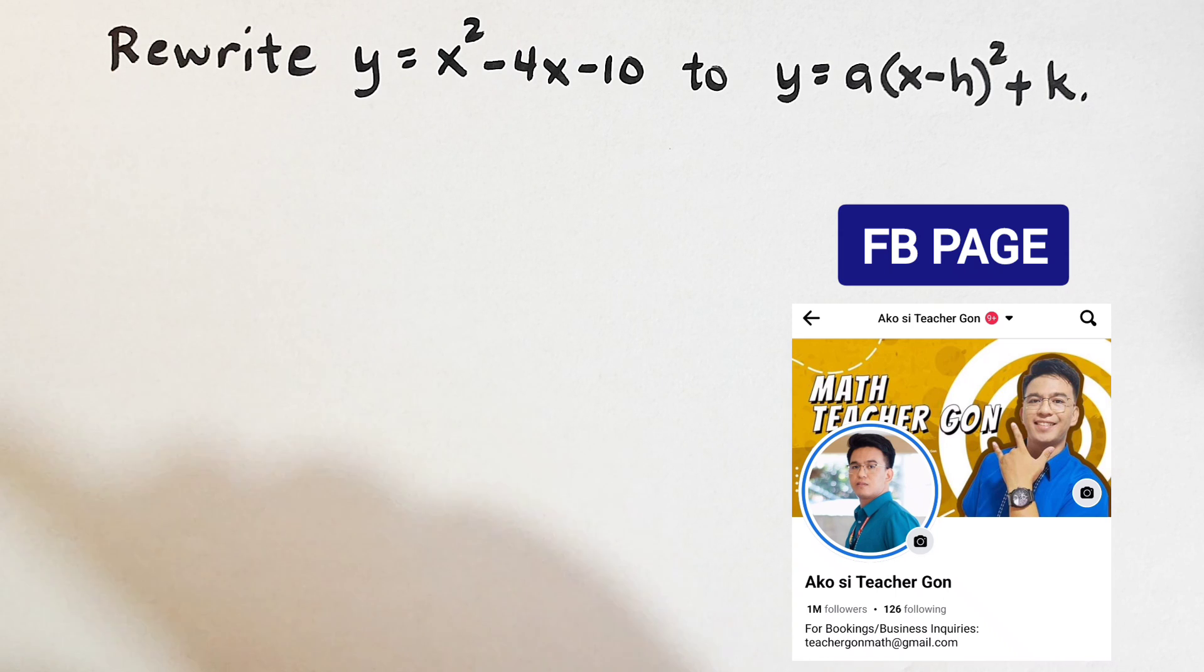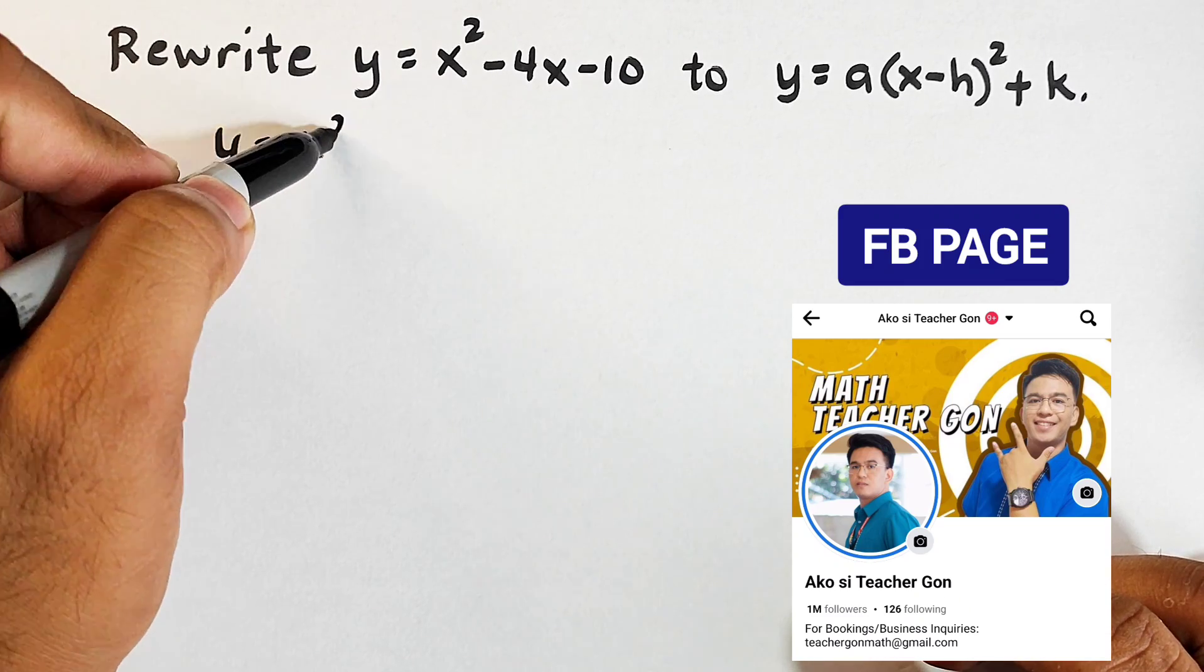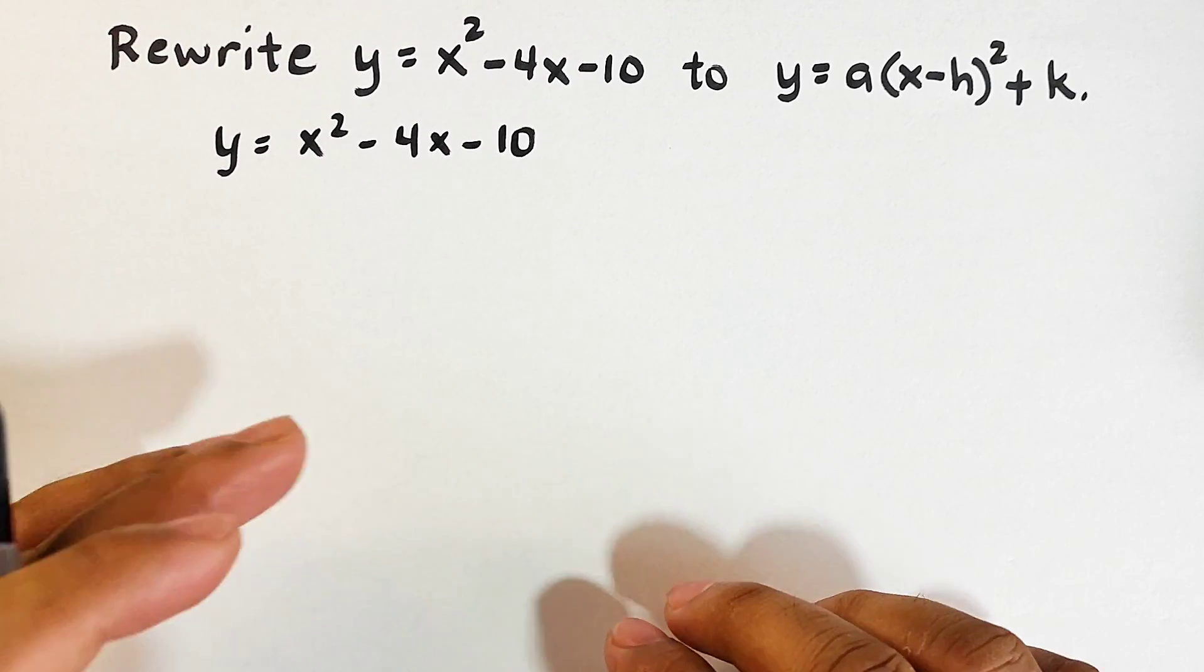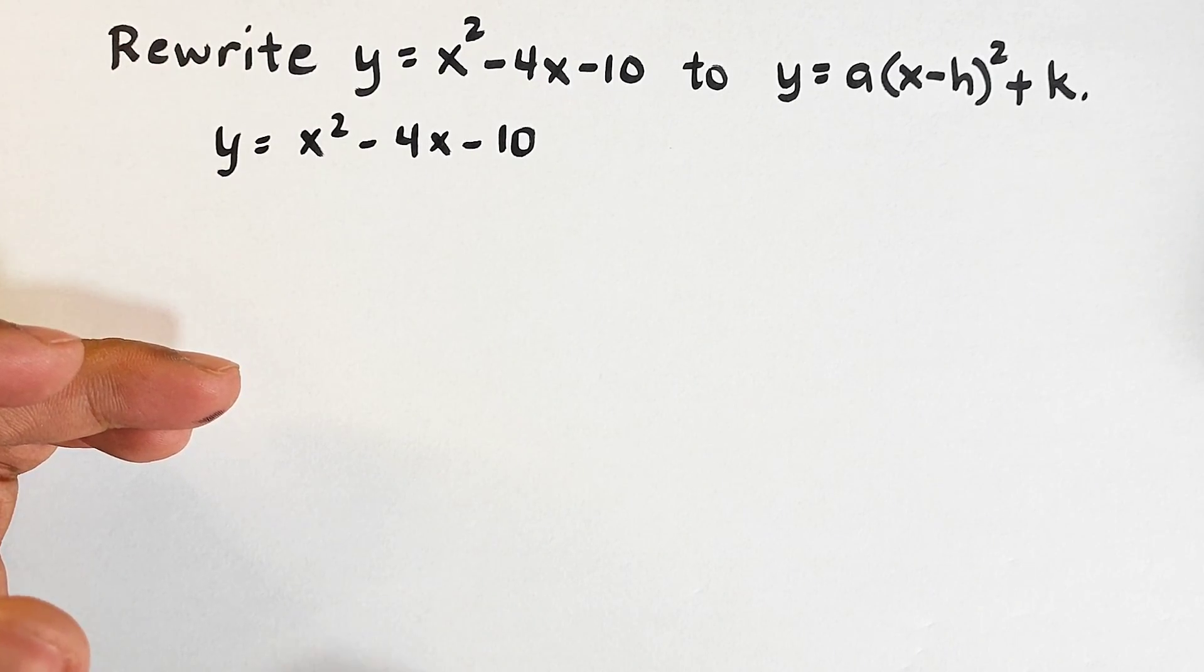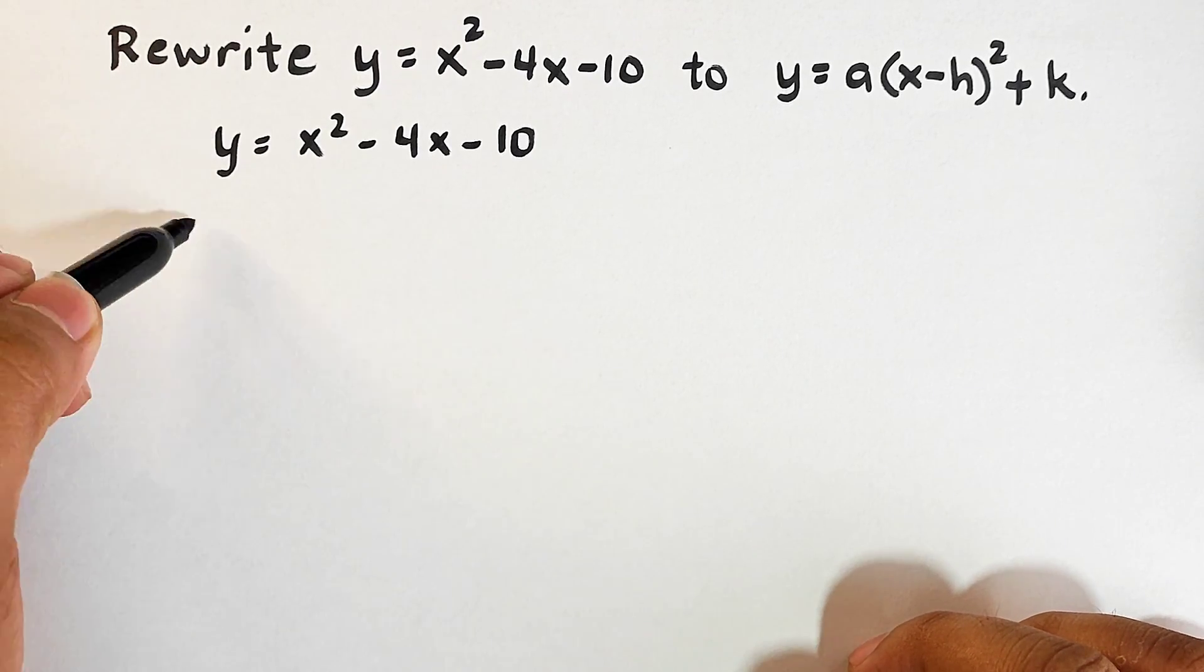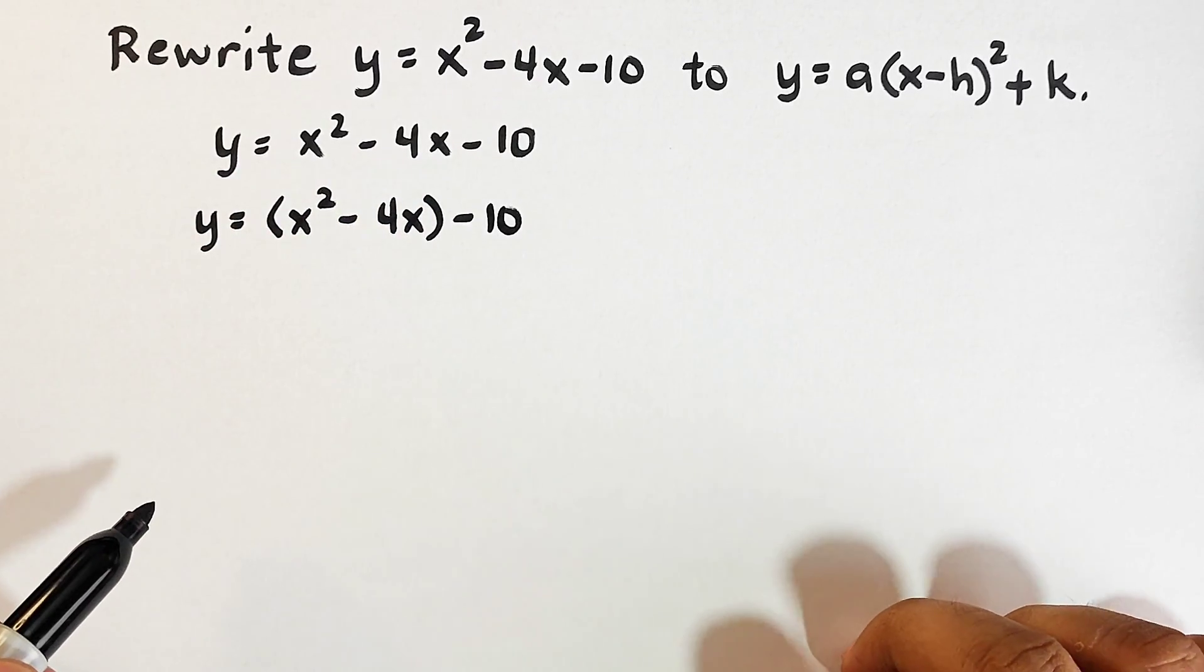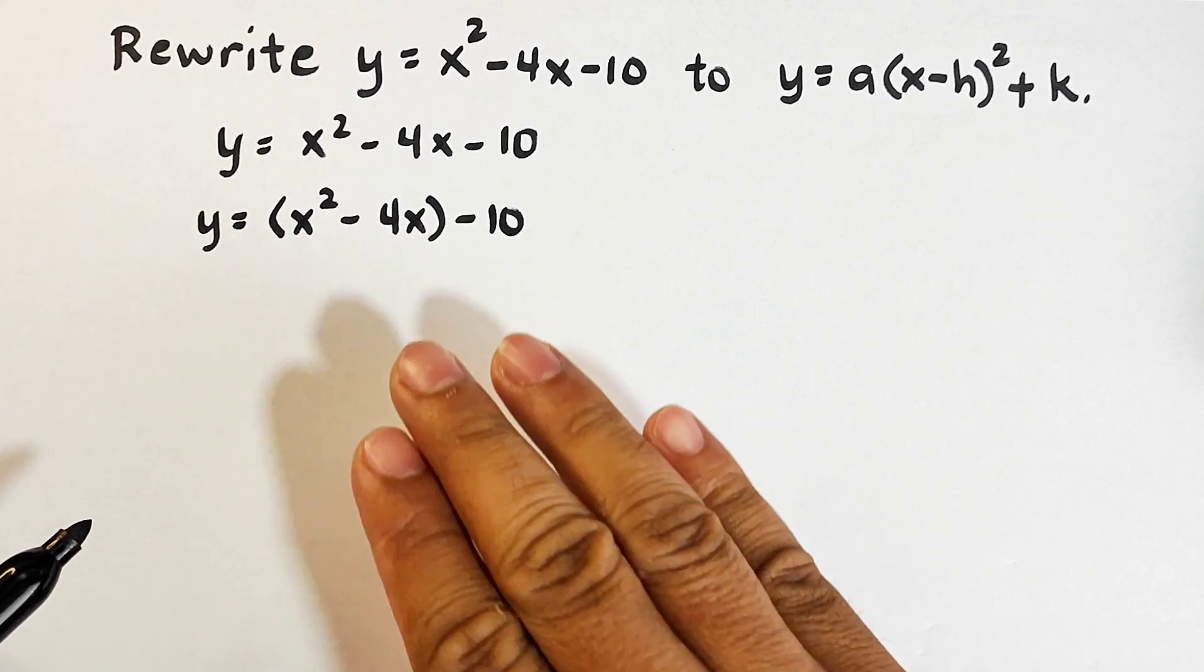Okay, so what is the first step? The first step is, first I will copy this one, y equals x squared minus 4x minus 10. Now, ang first step natin dito is to regroup the terms. We have x squared minus 4x minus 10. Ang kailangan natin dito yung group ay yung terms with the x variable separated with a constant. So it goes like this. You have your y equals the quantity of x squared minus 4x minus 10. As you can see, I separated this term and this term because they are the terms with the variable x compared to the constant.